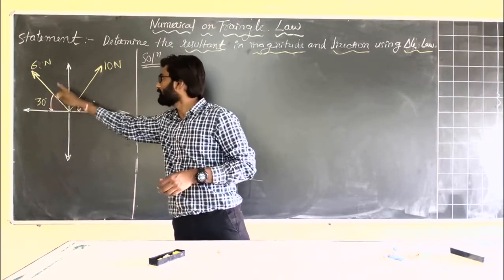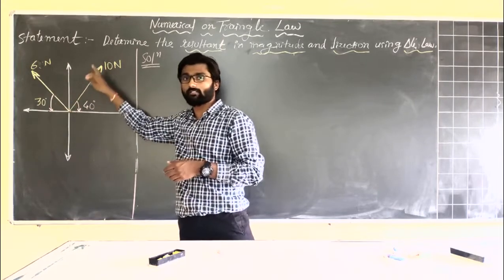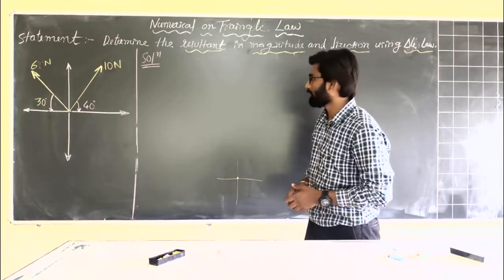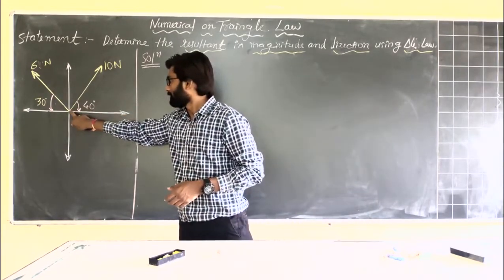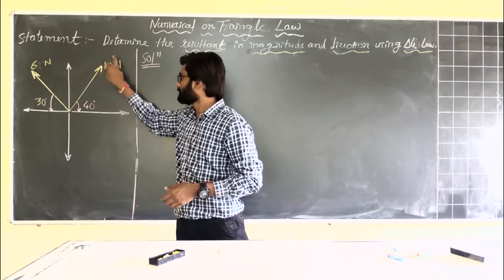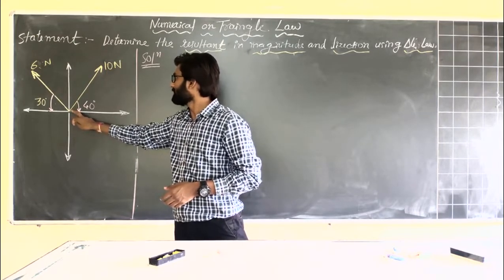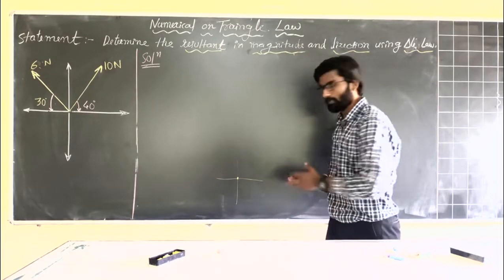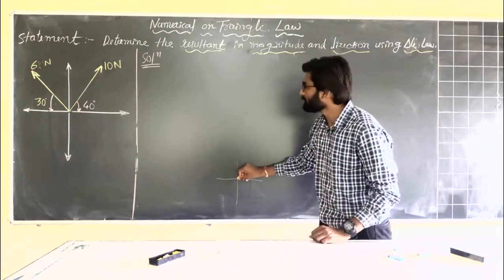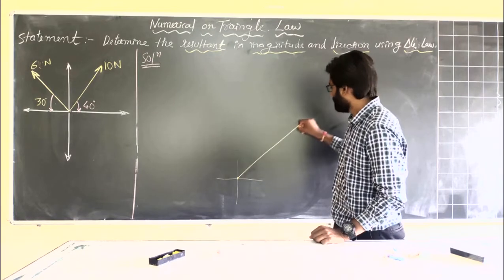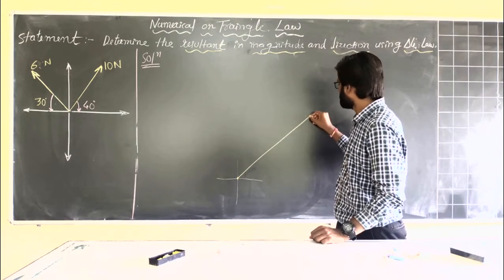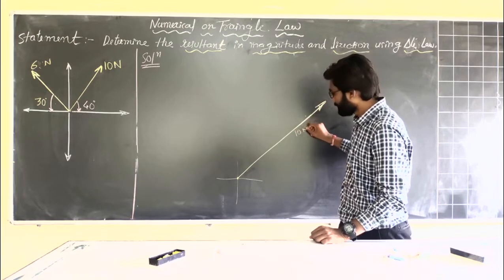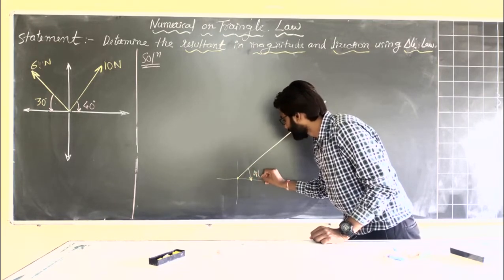You can start with either the 6 newton or the 10 newton force. In this case we will go with the 10 newton force. The 10 newton force acts along the first quadrant making an angle of 40 degrees. So from the origin point, we draw this force here — it is moving at 10 newton making an angle of 40 degrees.